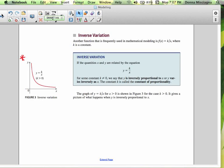Inverse variation. Another function that's frequently used in mathematical modeling is f(x) equals k divided by x where k is a constant. If the quantities x and y are related by the equation y equals k divided by x for some constant k not equal to zero, we say that y is inversely proportional to x or y varies inversely as x. The constant k is called the constant of proportionality.